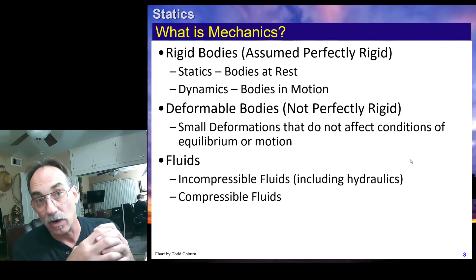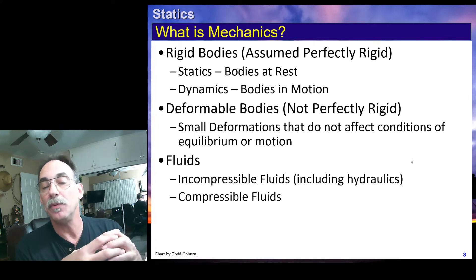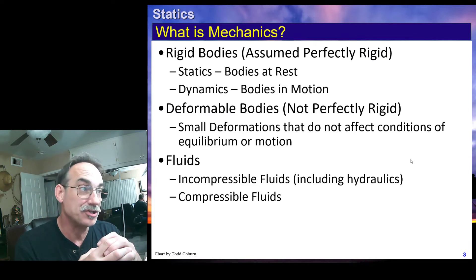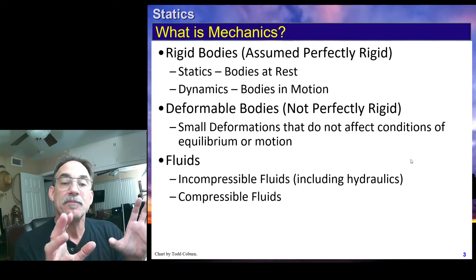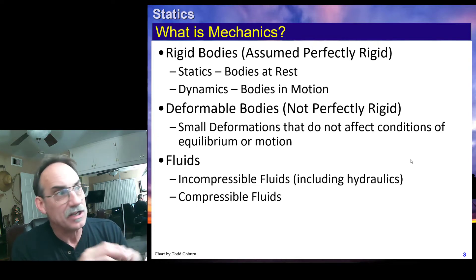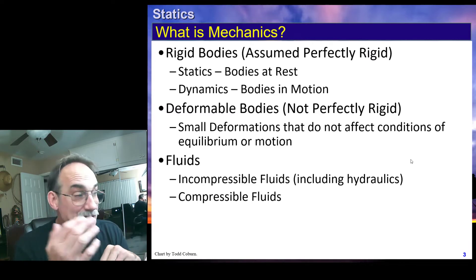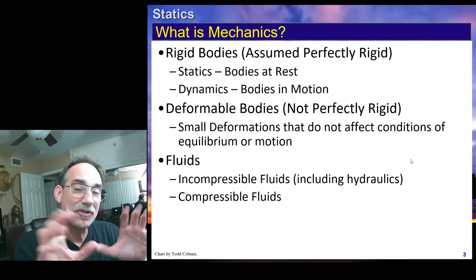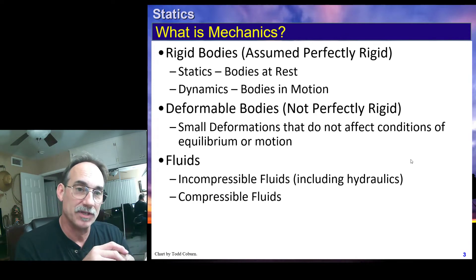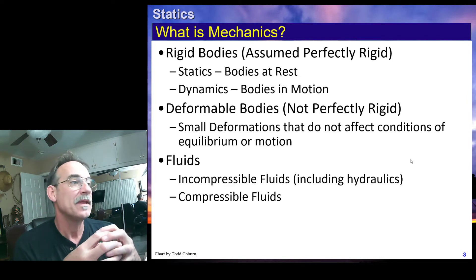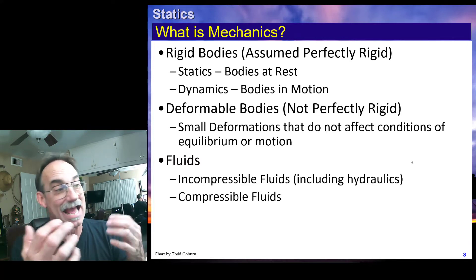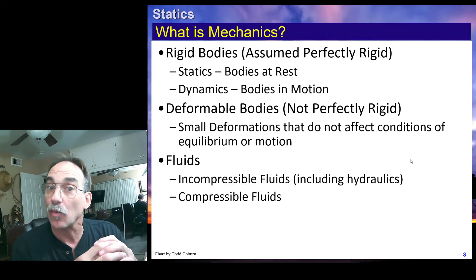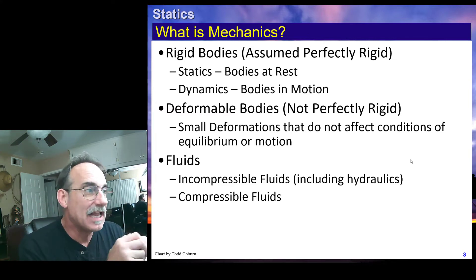Deformable bodies cause things to get a lot more complicated. We'll deal with some of the simpler complications in Structures 1 and Structures 2 classes. We have bodies that do deform, but the deformations have a negligible effect on the equilibrium or motion of the part. We're often going to start by assuming it's rigid, then assume it's deformable, and look at higher assumptions if needed. The third category is fluids — incompressible and compressible. Nearly everything is compressible if you pressure it enough, but we'll often treat fluids as incompressible for simple analysis, just like we treated structures as static.